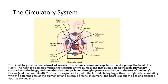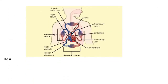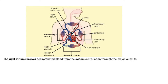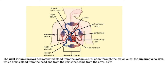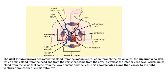In humans, the heart is about the size of a clenched fist. It is divided into four chambers: two atria and two ventricles. There is one atrium and one ventricle on the right side, and one atrium and one ventricle on the left side. The right atrium receives deoxygenated blood from the systemic circulation through the major veins — the superior vena cava, which drains blood from the head and arms, as well as the inferior vena cava, which drains blood from the lower organs and the legs. This deoxygenated blood then passes to the right ventricle through the tricuspid valve, which prevents the backflow of blood.